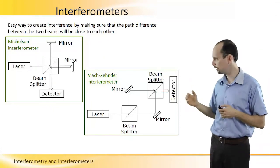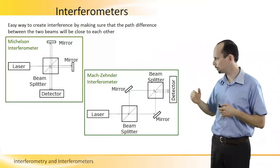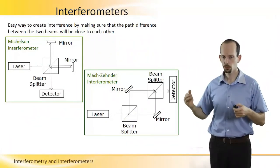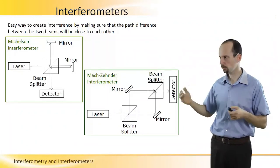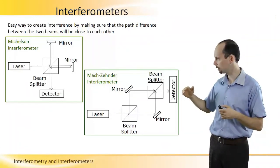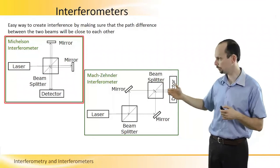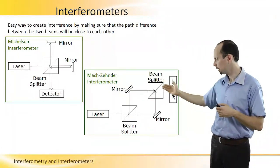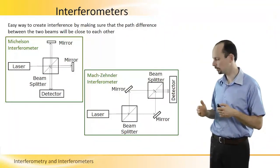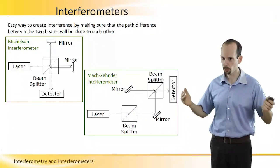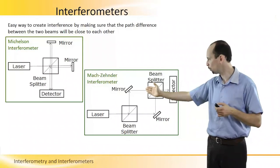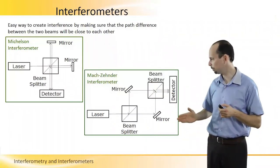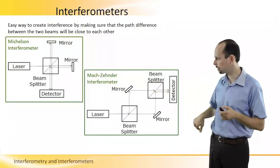In a Mach-Zehnder interferometer setup, we use two beam splitters: one beam splitter splits the beam, and the second combines it again, and then the two beams hit the detector. The difference between them is that in the Michelson interferometer we typically create interference based on reflection from an object, because we can replace one of the mirrors with an object. In the Mach-Zehnder interferometer, we usually — though not always — use it in transmission mode, because we can place a transparent object in one of the arms so that the beam passes through it.